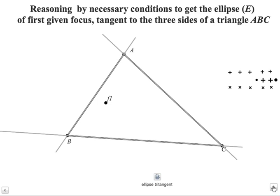So we'll use a reasoning by necessary condition to construct the ellipse which first focus is given, which is this one, and tangent to the three sides of the triangle ABC. When I say side, I say the line supporting the sides of the triangle.